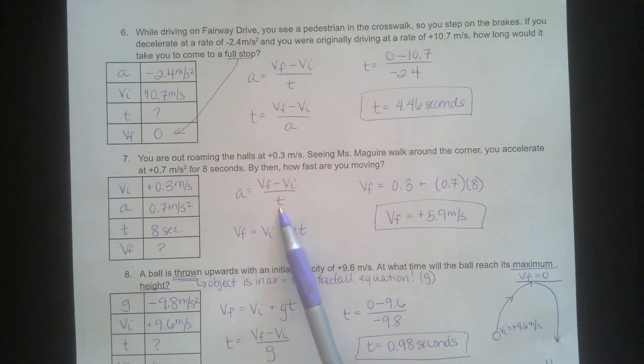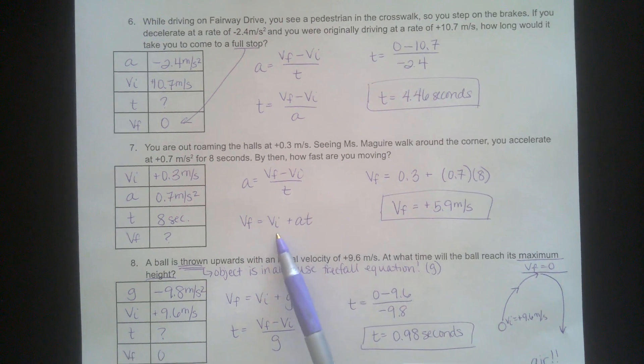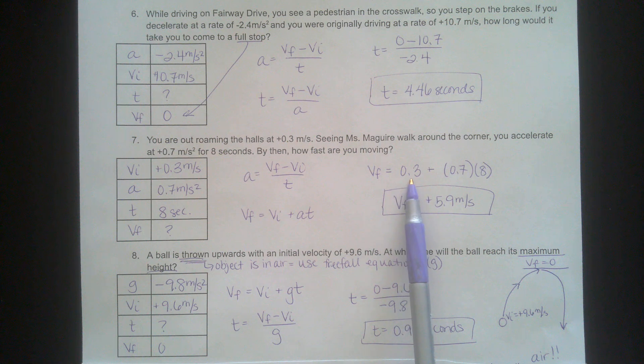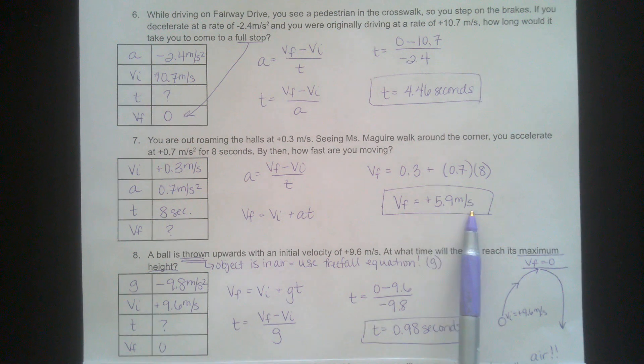Here's the original equation. Here is the equation rearranged to solve for VF. Plug in VI, A, and T. And you get about positive 5.9 meters per second.